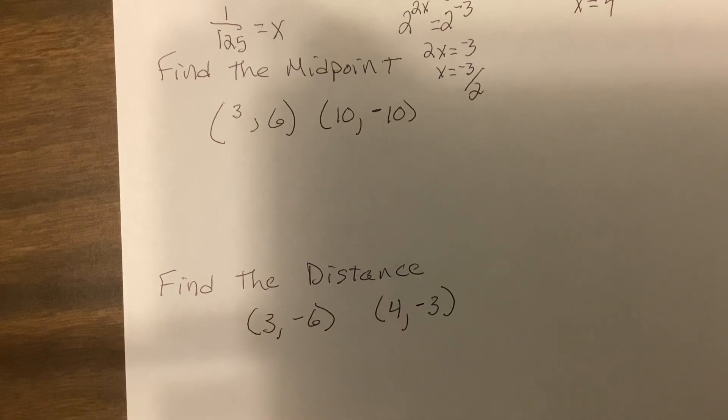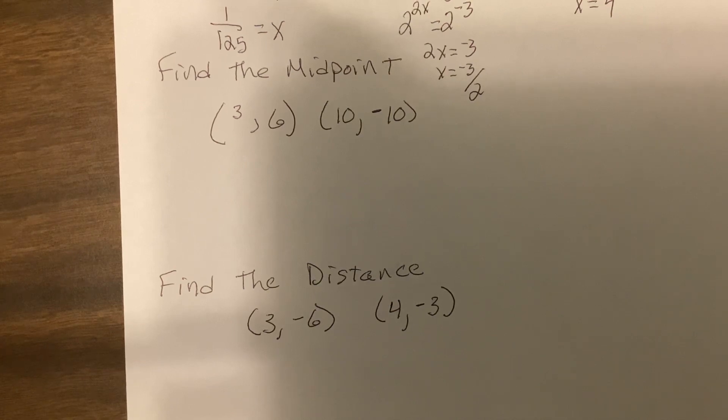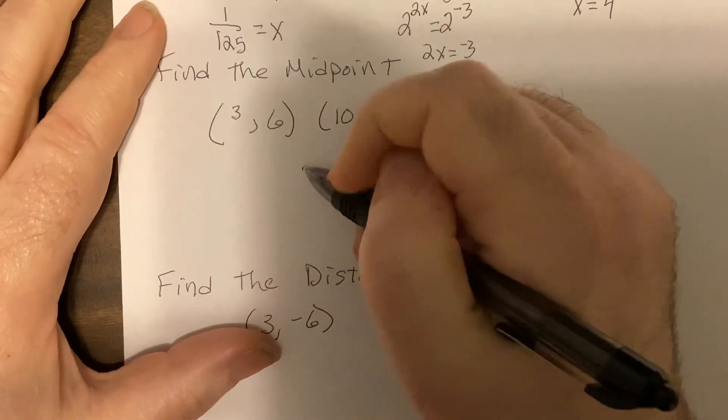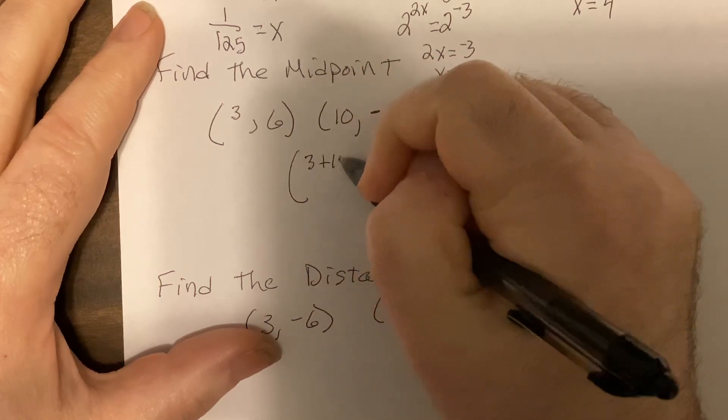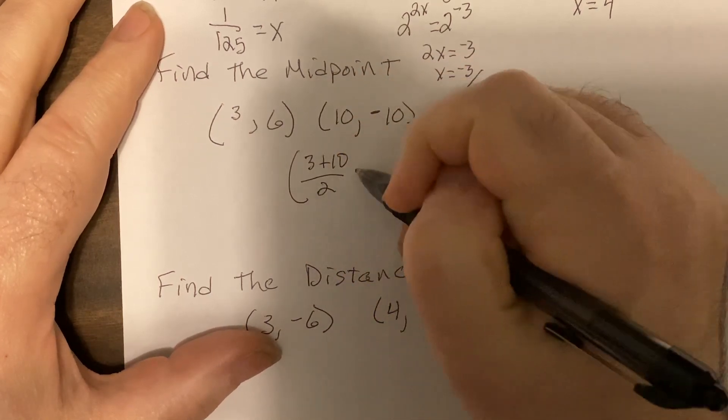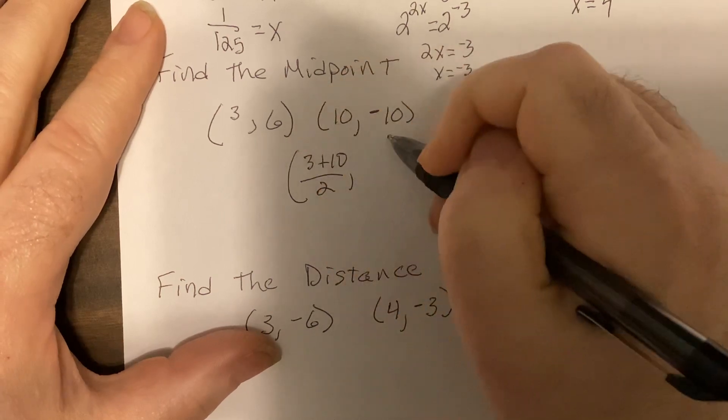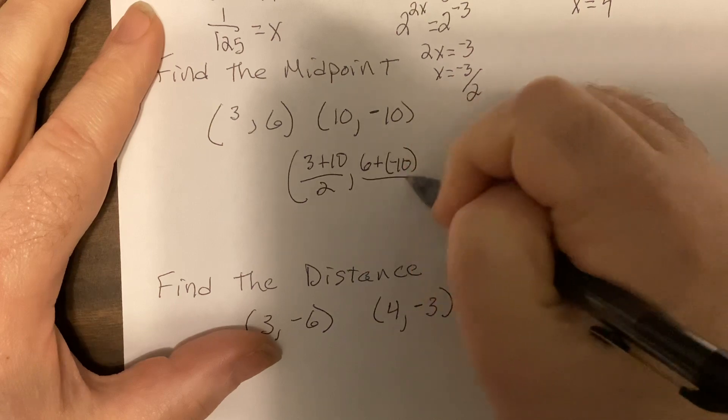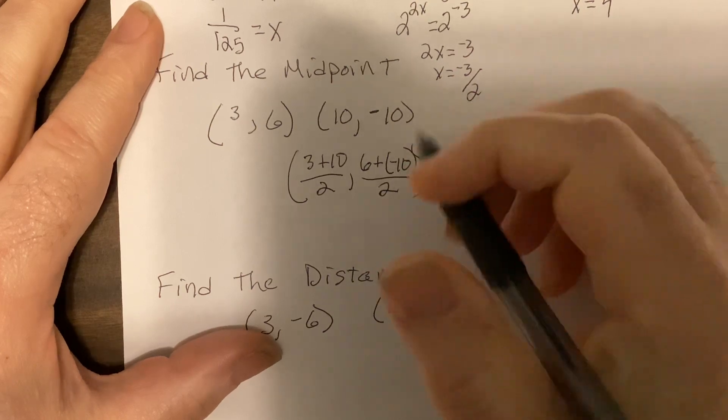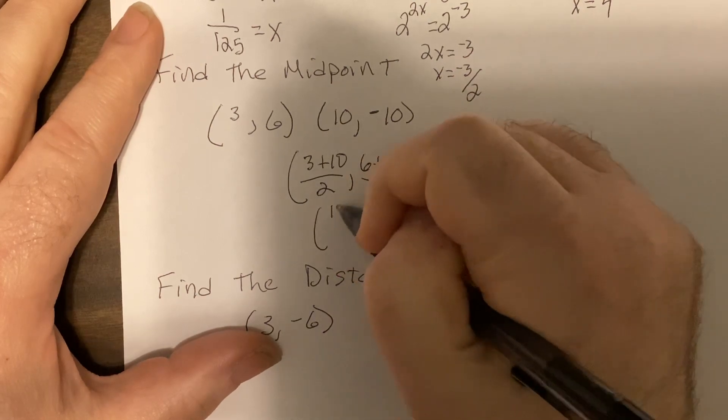Do the next two right now. You should know those formulas by heart. Okay, midpoint: add the x's divide by two, three plus ten, comma, add the y's divide by two. So 13 over two...